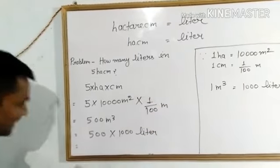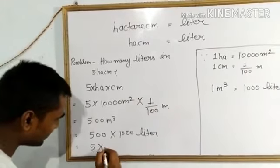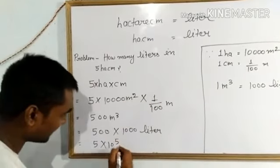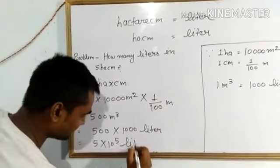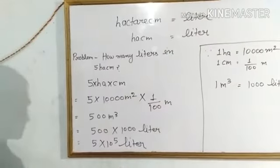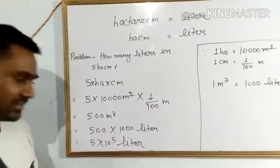And by multiplying it, it will be 5 into 10 to power 5 liters, or you can say it is 5 lakh liters.